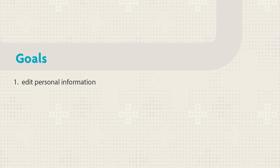For example, if you change your last name, the new last name appears in all the courses you are enrolled in. You will set your privacy options to choose the information you want to make publicly available in the Roster, Group Pages, and User Directory.